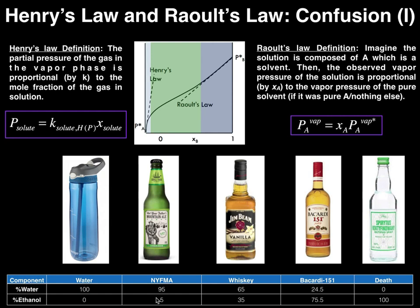Now let's increase the ethanol percentage quite a bit. We're going to go up to Jim Beam Vanilla Whiskey, 35% ethanol, 65% water. Now we're somewhere in the middle on the curve, increasing the amount of ethanol. Now we're deviating from ideal behavior because we're no longer following Henry's Law — we're now definitely in real solution behavior.